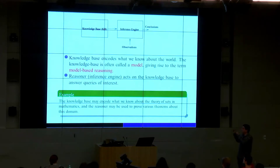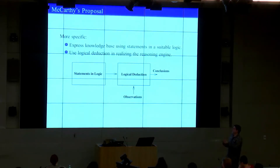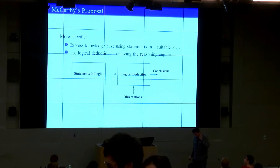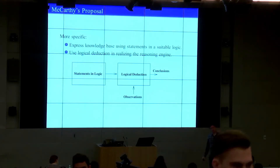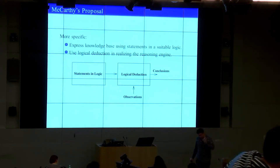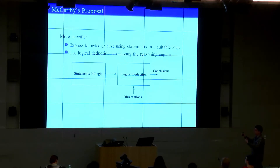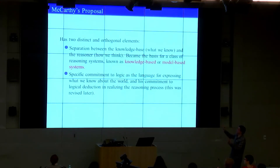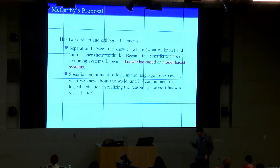Sometimes the knowledge base is called a model, giving rise to model-based or knowledge-based reasoning. But McCarthy made something more specific: he proposed that knowledge be expressed as statements in logic, and that the reasoning process be logical deduction. These are two specific commitments — using logic for modeling, and deduction as a way to emulate reasoning. Later, this particular aspect of the proposal was revised, as we'll see. The key orthogonal elements are the separation between the knowledge base and the reasoner, and the specific commitment to logic.